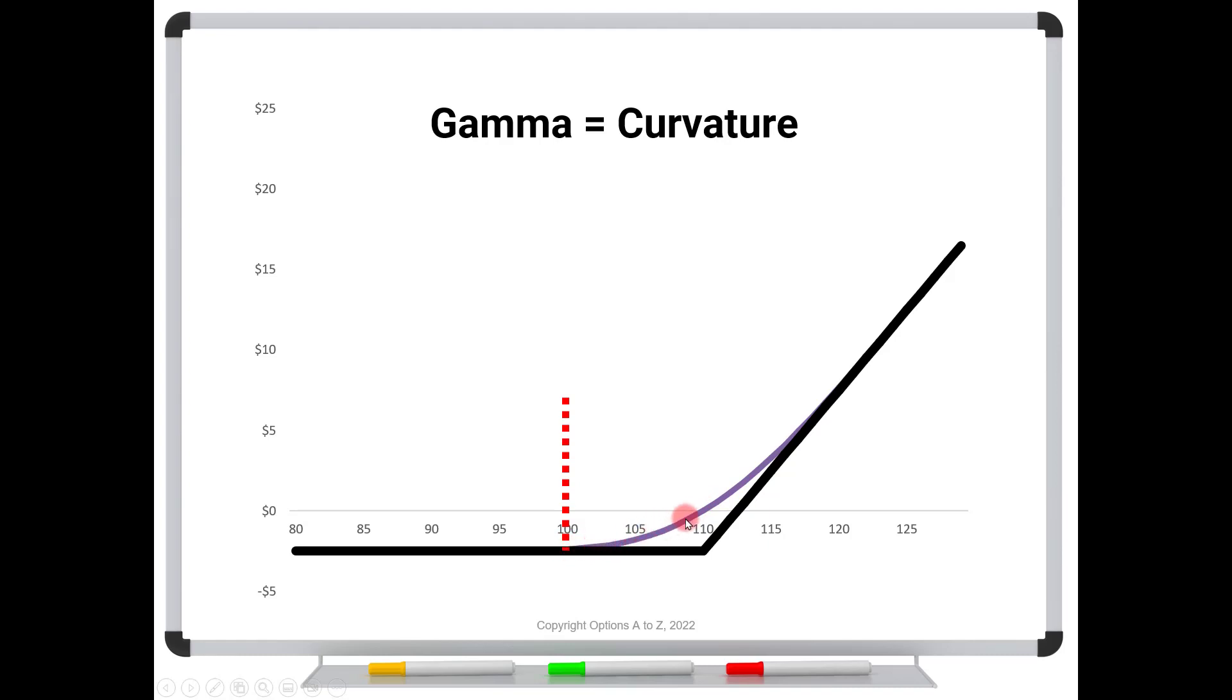And the way that you see that is that this purple line is very flat right in here. We don't start picking up any acceleration of deltas until we start getting closer to at the money. But what would happen to this purple curve if we kept everything else the same? Still 30 days to expiration, stock at 100, 110 strike, but we crank up the volatility to let's say 40%. So we're moving from 20% to 40%.